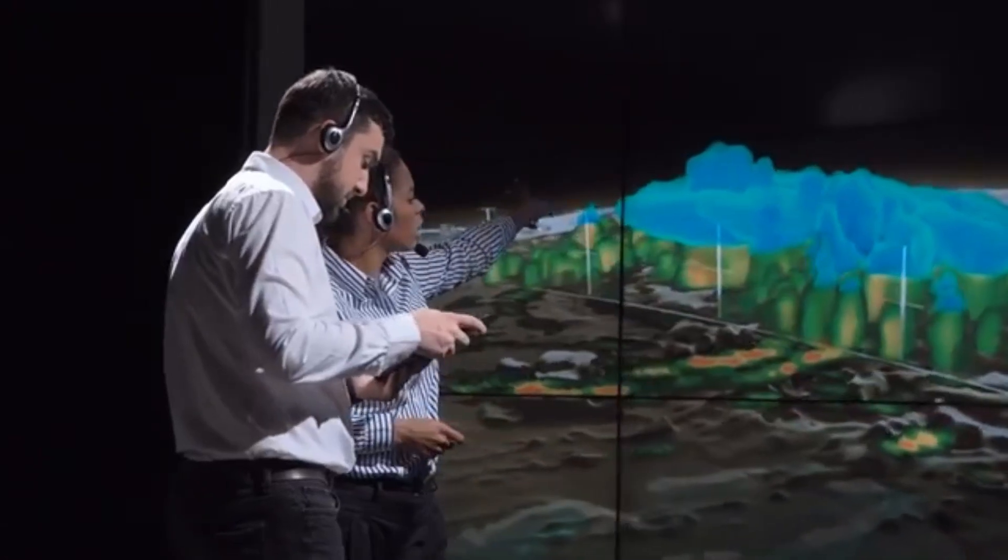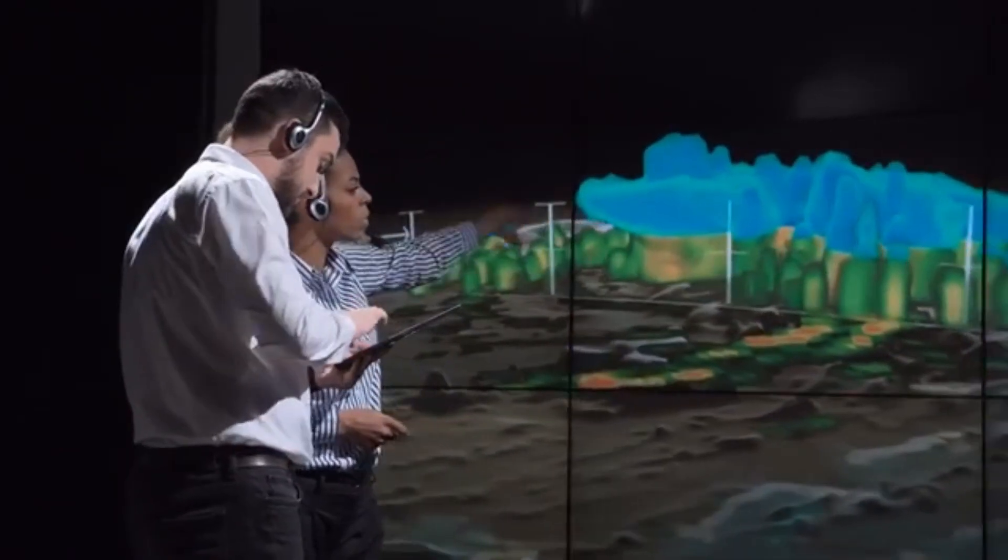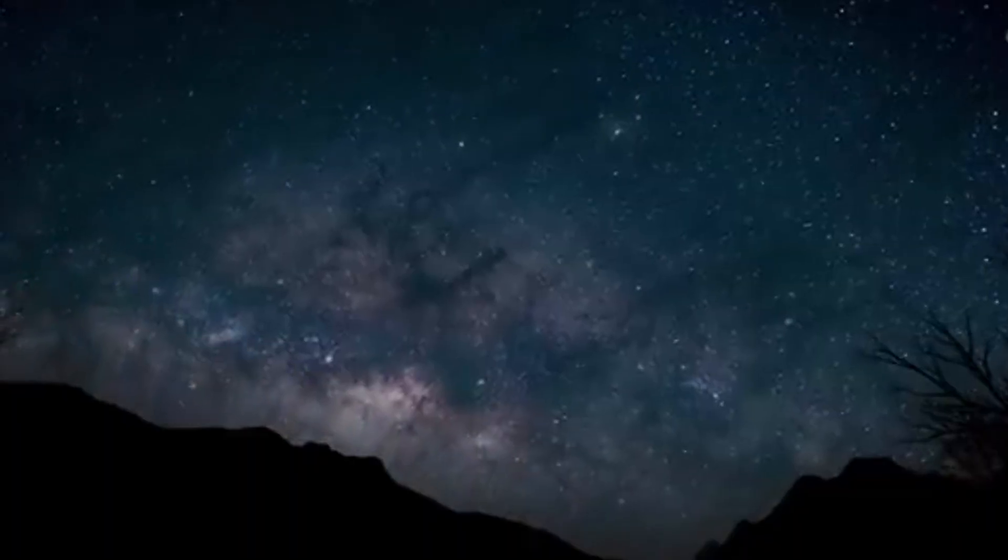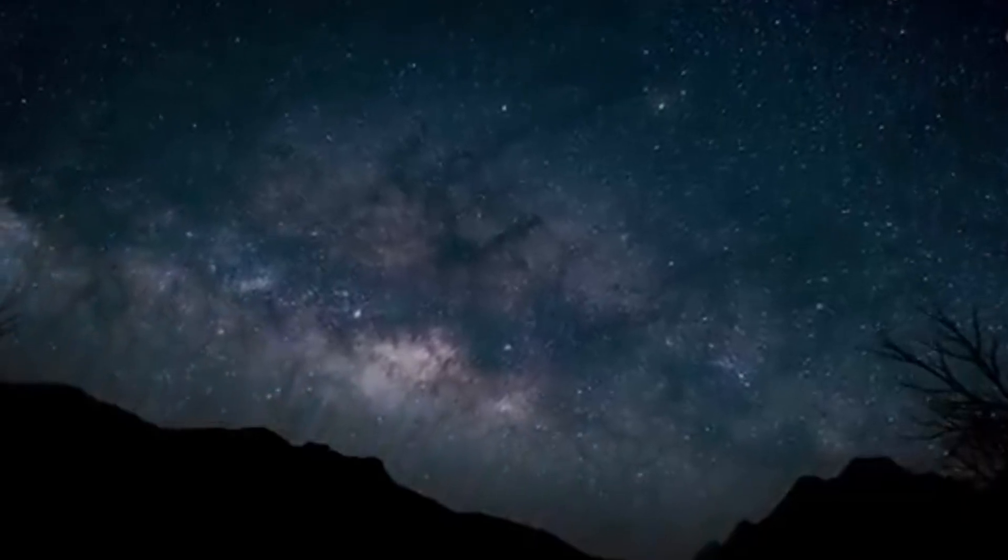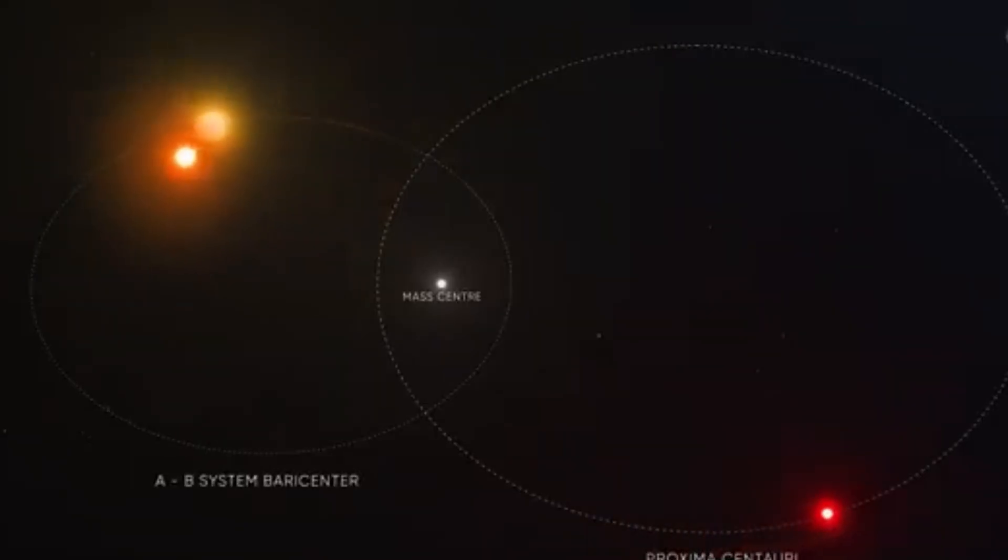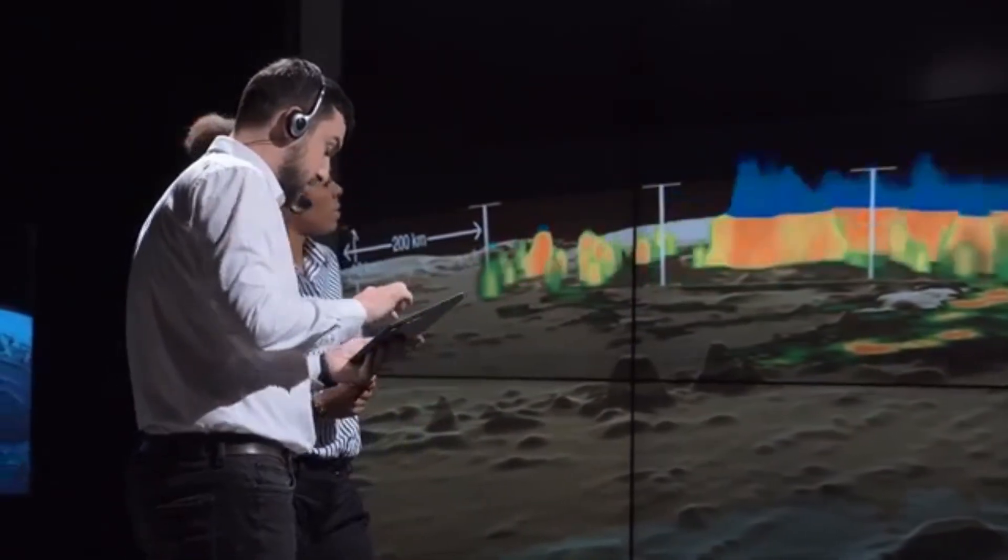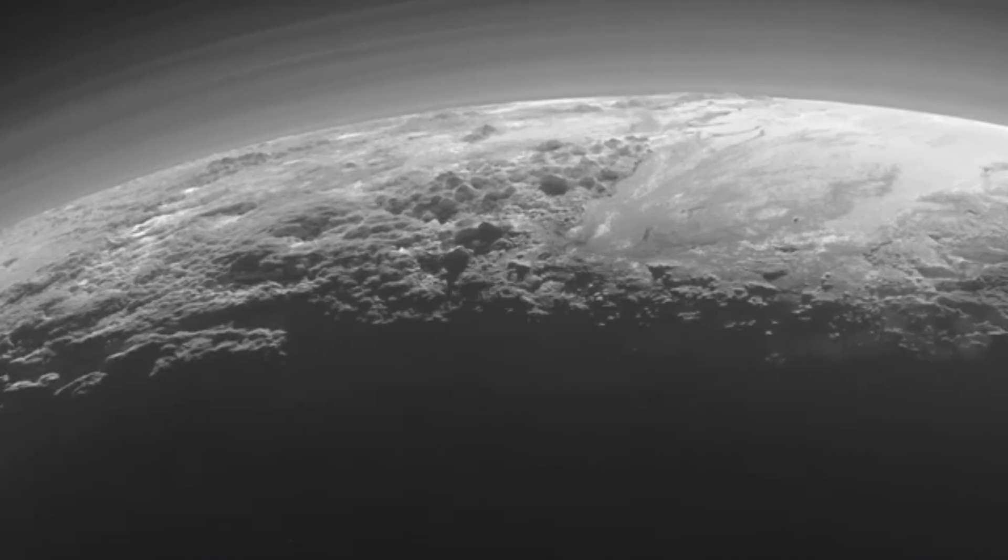Even our probes, such as New Horizons, show that we can study planets from great distances without setting foot on their surface. In the hypothetical future, it's possible that Pluto will play that same role, not for us but for others, as an outpost of surveillance or perhaps a neutral point for first contact.